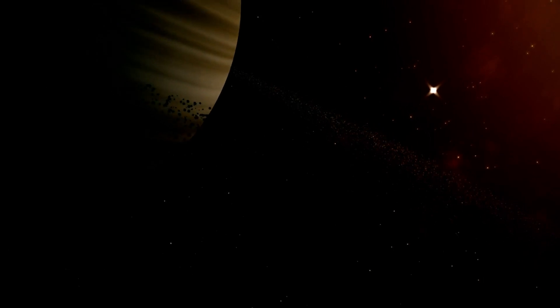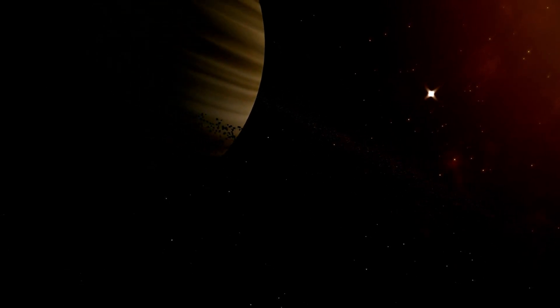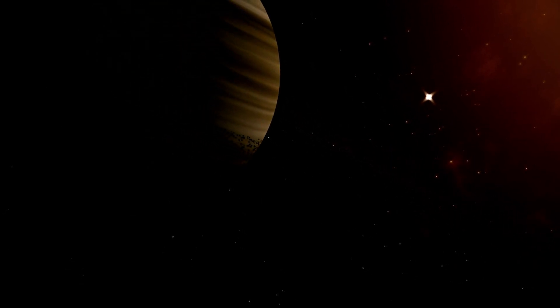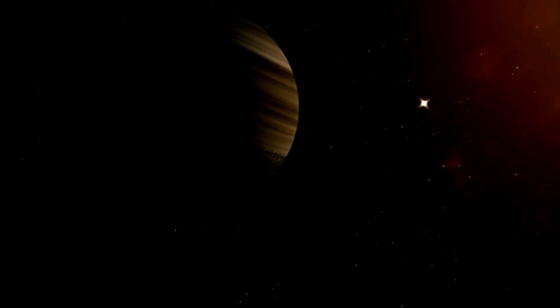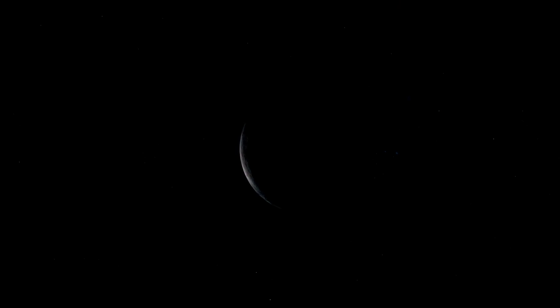For example, Kepler-442b orbits a red dwarf star about 1,100 light-years away and is just slightly larger than Earth with mild enough temperatures for liquid water. Another prime example is the nearby exoplanet Proxima b orbiting our closest neighboring star just 4 light-years away.